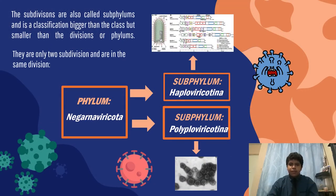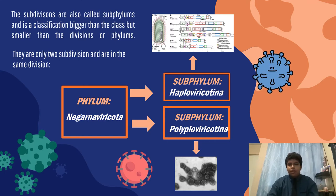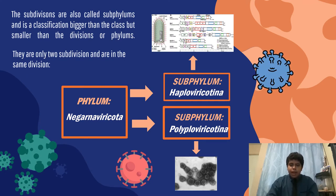The next classification is the subdivision, also called subphylum, which is bigger than the class but smaller than the division or phylum. There are only two subdivisions in the same phylum: the phylum Neornavirikota, with two subphyla, Haplovirikorina and Polyplovirikorina.